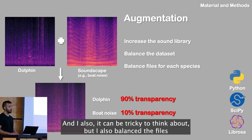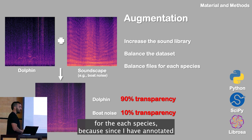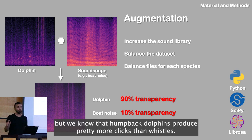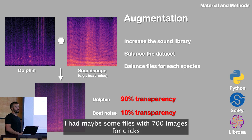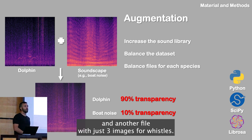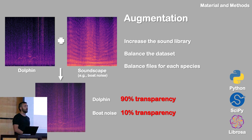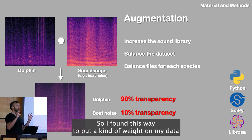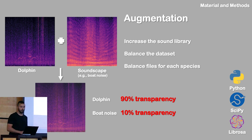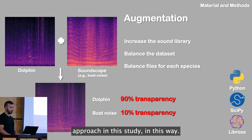It can be tricky to think about, but I also balanced the files per species. Since I annotated both echolocation click trains and whistles, and humpback dolphins produce far more clicks than whistles, I had maybe some files with 700 images for clicks and another file with just three images for whistles. So I applied a kind of weighting on the data to achieve a balanced approach.